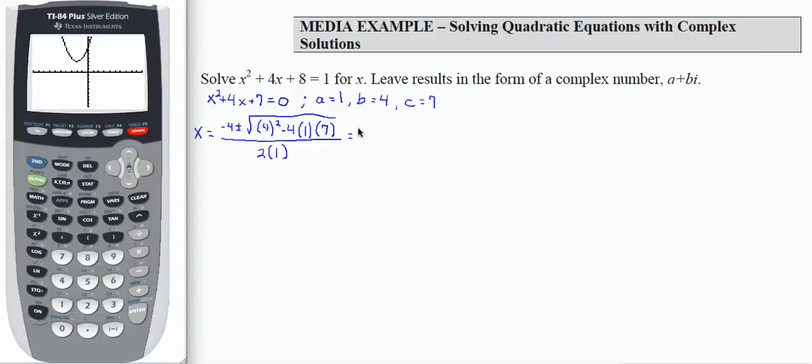Let's simplify where we can. I get negative 4 plus or minus square root, 4 times 4 is 16, minus 28, divided by 2. If I combine underneath my square root, I get square root of 16 minus 28 is negative 12, divided by 2.